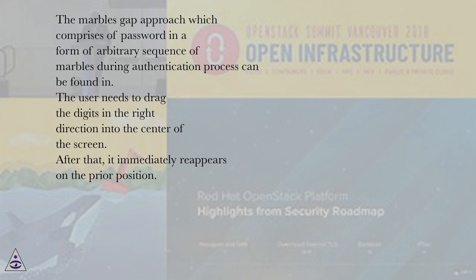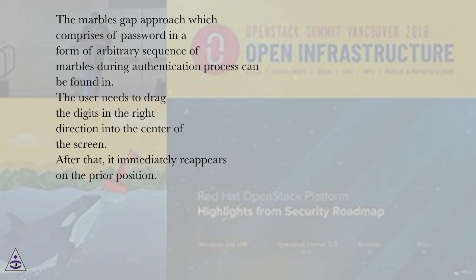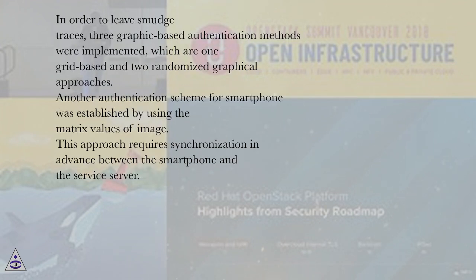The marbles gap approach, which comprises a password in the form of an arbitrary sequence of marbles during the authentication process, requires the user to drag the digits in the right direction into the center of the screen, after which they immediately reappear on their prior position. In order to leave smudge traces, three graphic-based authentication methods were implemented: one grid-based and two randomized graphical approaches.